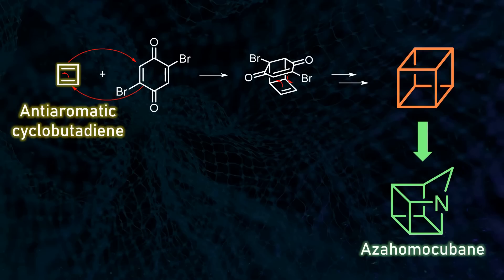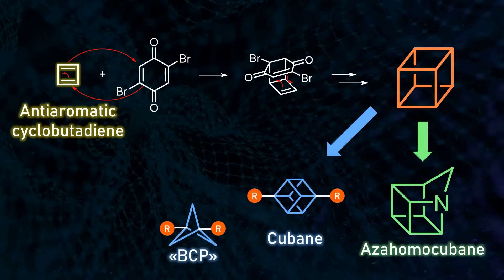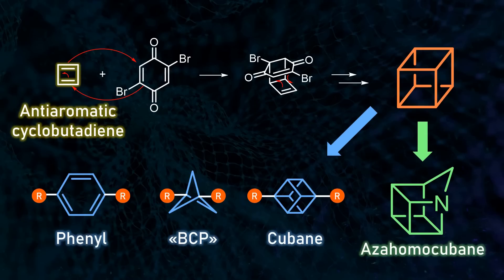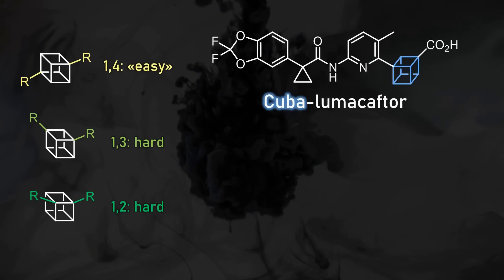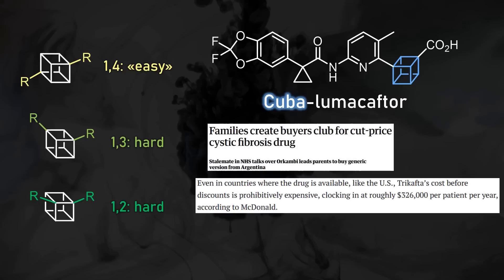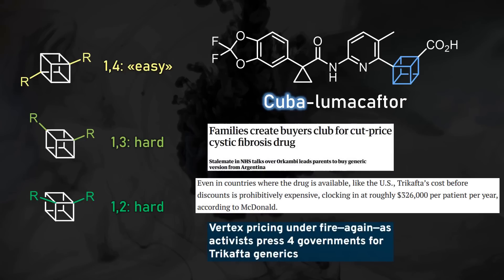Cubanes, just like bicyclopropanes, can also function as benzene bioisosteres for drug optimization. Trailblazing research has now made a class of underexplored cubanes accessible, and the chemists used this methodology to synthesize an analog of a cystic fibrosis drug. The original molecule has an intriguing story, connected to massive public upset around drug prices in the hundreds of thousands per year.